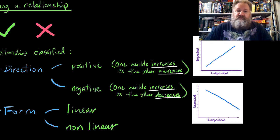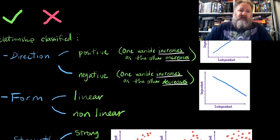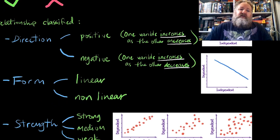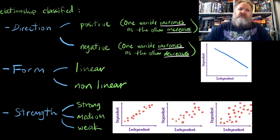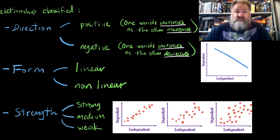So as one is increasing, the other is decreasing. The form is also important when we're talking about these relationships between these two variables in bivariate data. They can be linear, which is just a straight line, or they can be non-linear, which is curves.